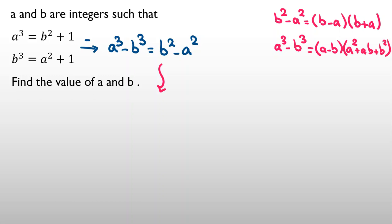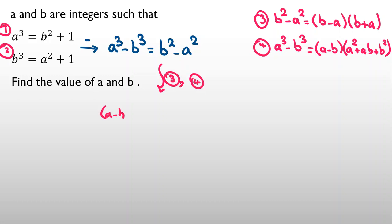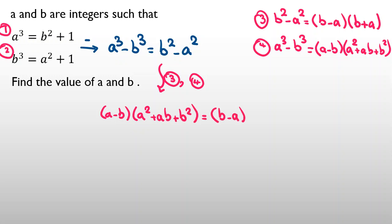Let me call the equations first, second, third, and fourth. If we use equations three and four, we get: A minus B times A squared plus AB plus B squared equals B minus A times B plus A.